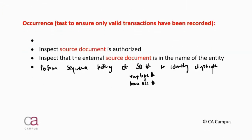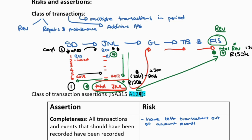Let's move on to the occurrence assertion. We need to develop tests to ensure that only valid transactions have been recorded — not only duplicates, but there could also be fictitious transactions. Let's go to our summary to see how we need to start our testing. The situation is: it's in the journal, but there's no source document for it. They've recorded it and it shouldn't be there, because only source documents that are valid should be recorded.